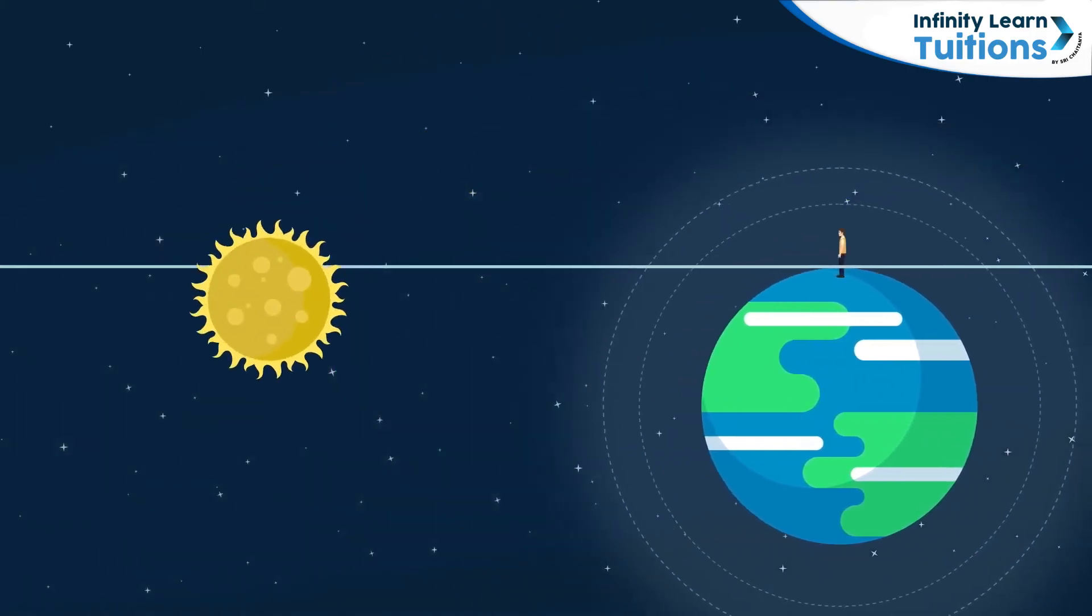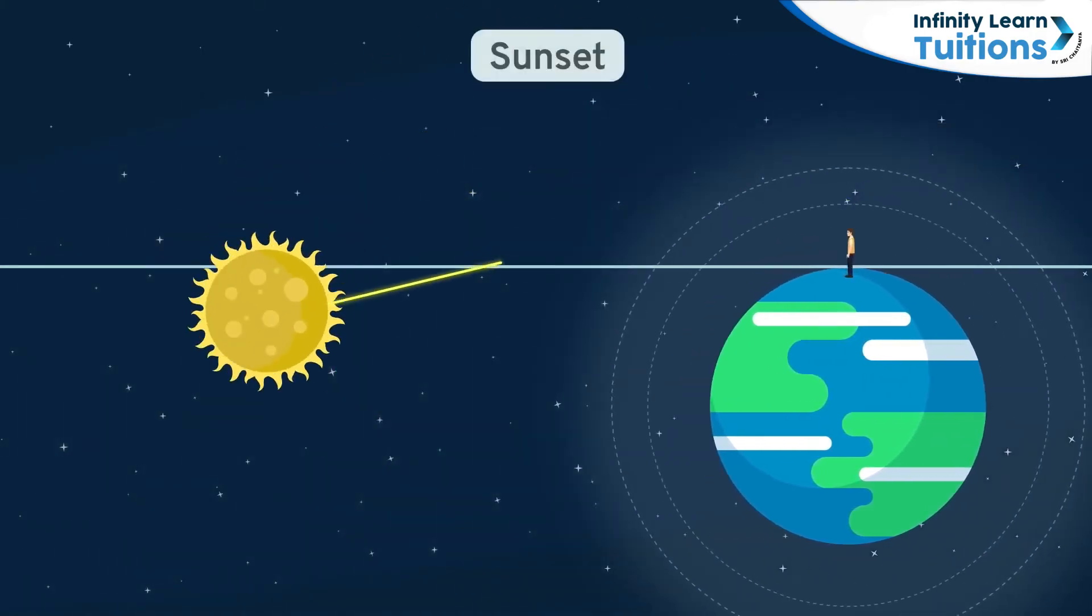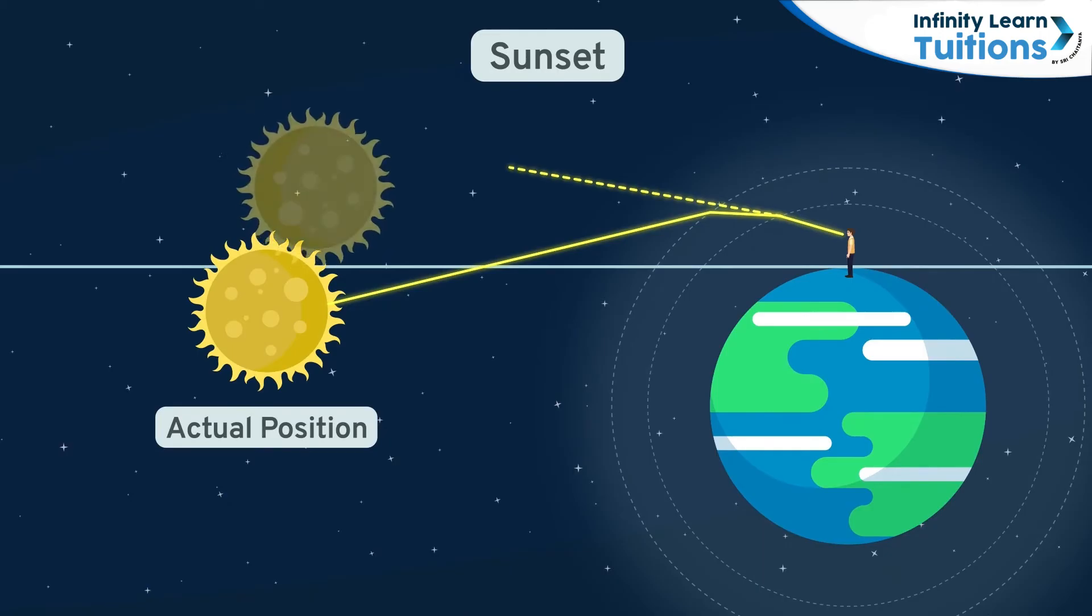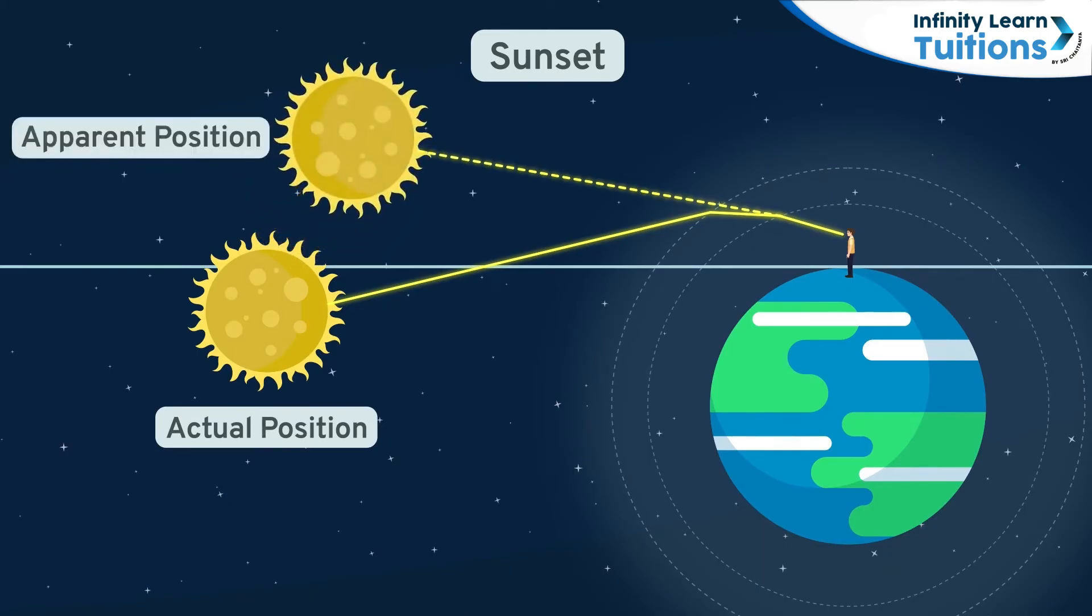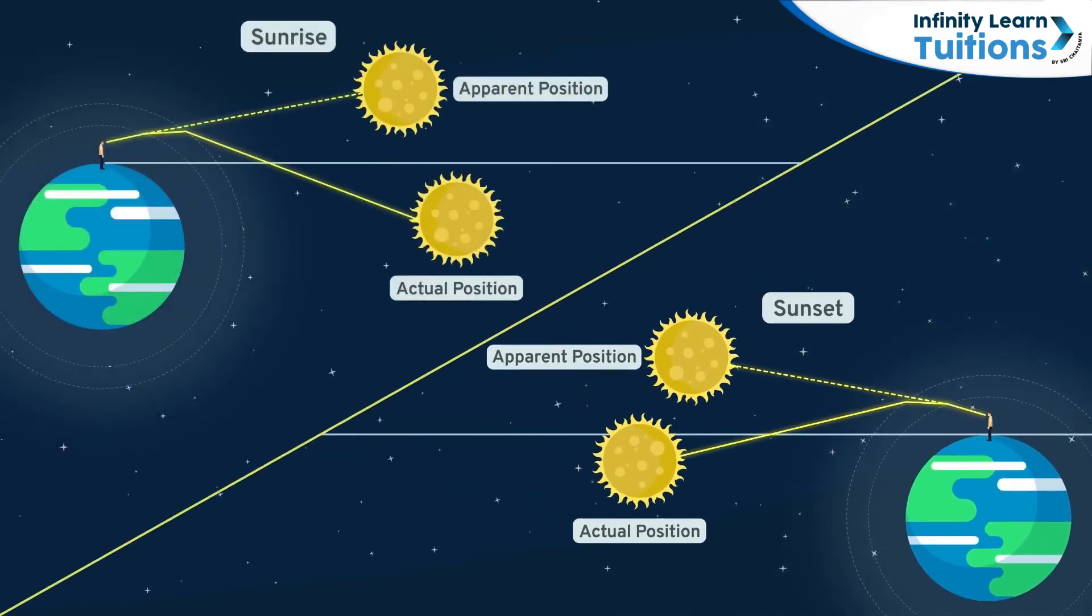Something similar happens during the sunset. The rays of light bend at the atmosphere and if the rays are back traced, the sun appears to be present above the horizon even after it has set. Thus, refraction or bending of light causes us to see an early sunrise and a delayed sunset.